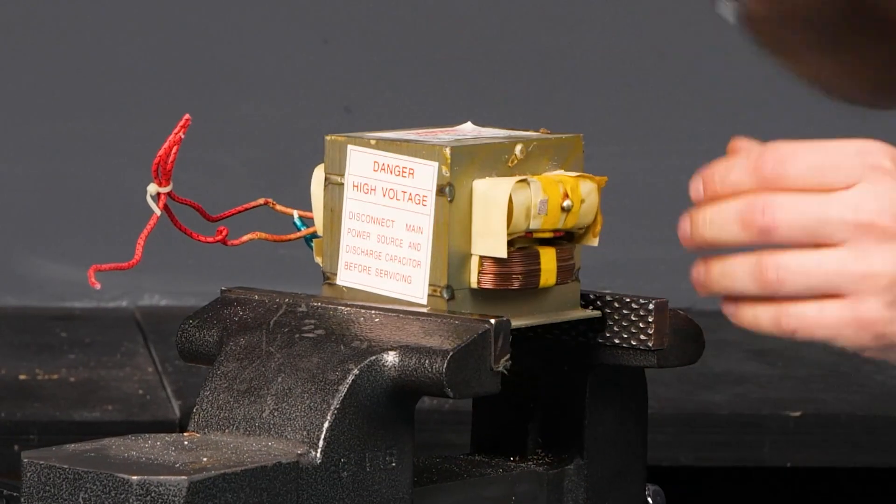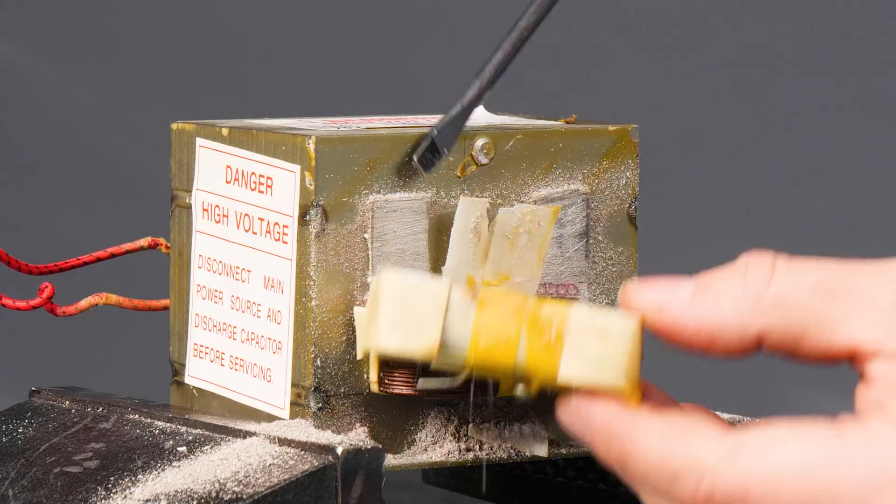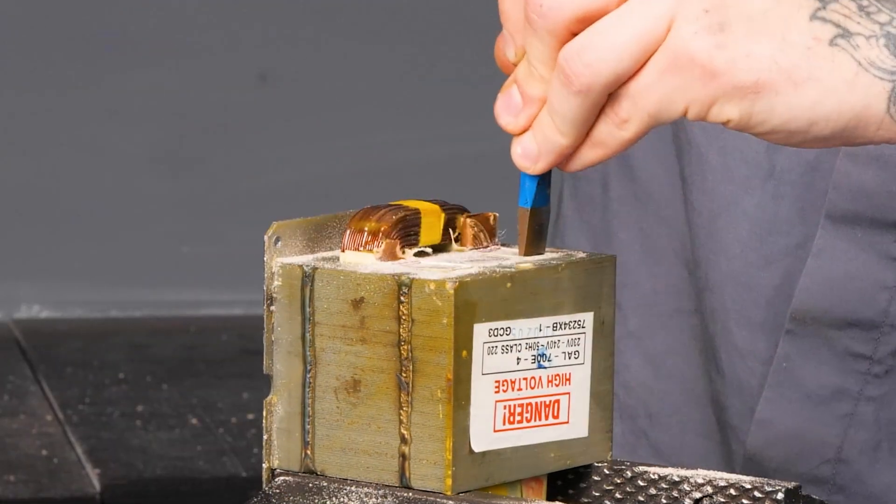First off, I need to take apart the microwave to get to the voltage transformer inside. I carefully cut off the wire connections and remove the transformer.